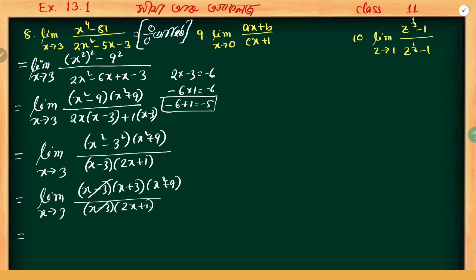X minus 3 cancels. Now we put the value: 3 plus 3 times 3 squared plus 9 divided by 2 into 3 plus 1. This gives 6 into 9 plus 9 equals 6 into 18 equals 108 divided by 7.